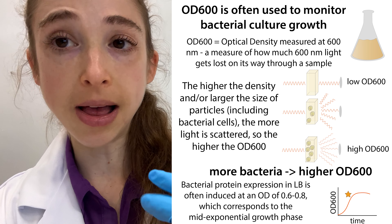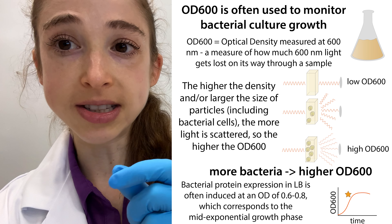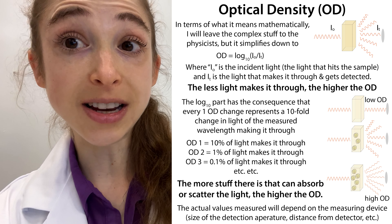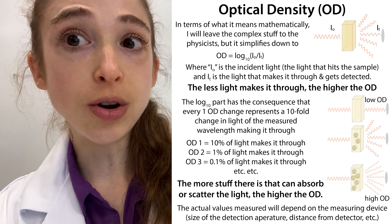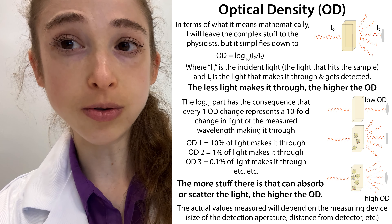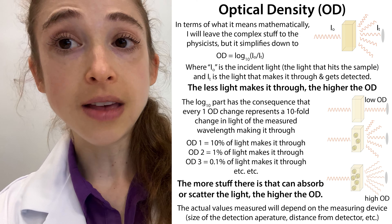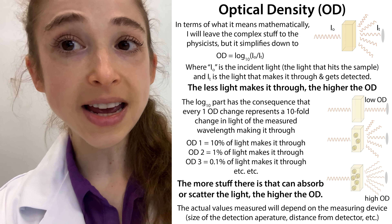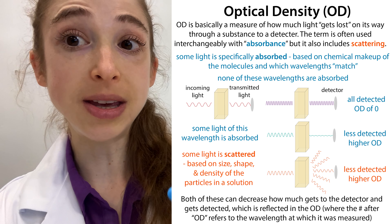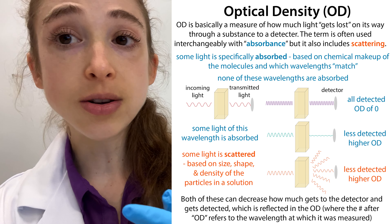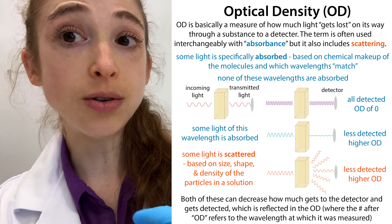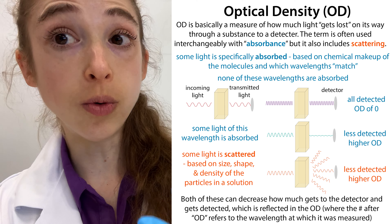So the more the bacteria multiply, the more turbid the solution is going to be, the more scattering you're going to have as the light passes through. Thus, less light is going to hit the detector and we are going to get what we call a higher OD value — this optical density value. So the more light gets lost, the higher the OD. In this case the light's getting lost because of scattering, although in other cases the OD might be high because of absorbance. So sometimes you see the terms OD and absorbance used interchangeably, but that's only in certain cases when you don't have to worry about scattering.